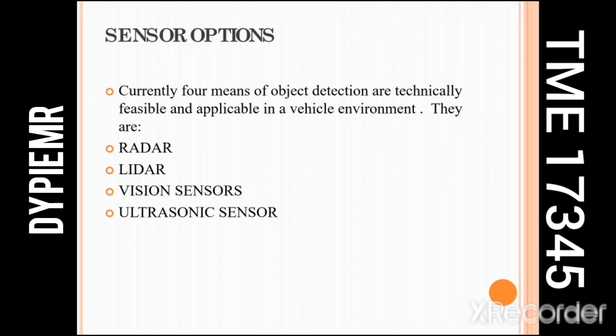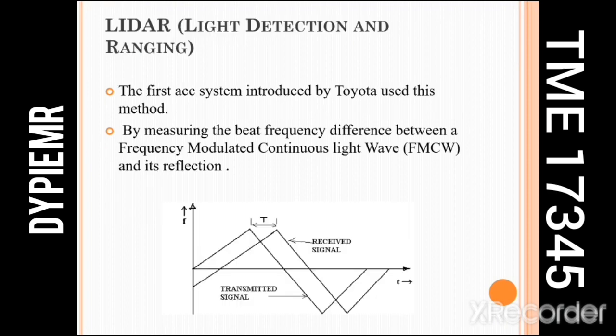The sensor options used in ACC for object detection are: radar, that is Radio Detection and Ranging; lidar, that is Light Detection and Ranging; vision sensor, which uses a camera; and ultrasonic sensor, that uses ultrasonic sound for detection of objects. The lidar sensor was used in the very first ACC system from Toyota. LIDAR uses pulse sensor beams which are reflected back from the object to determine the distance. The time between two laser beam reflections is used to calculate the velocity of the object.